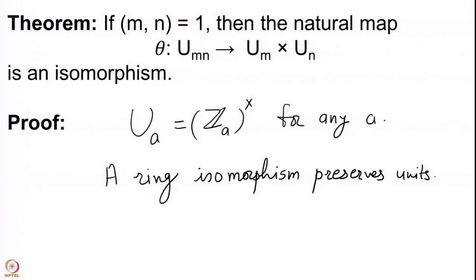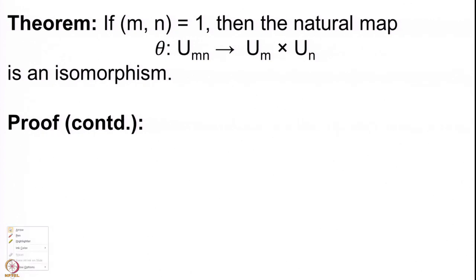The group of units is not preserved under addition — for instance, 1 is always a unit and −1 is always a unit, but their sum is 0, which is never a unit. However, the set U(m) is a group with respect to the multiplication coming from the finite ring Z_m.